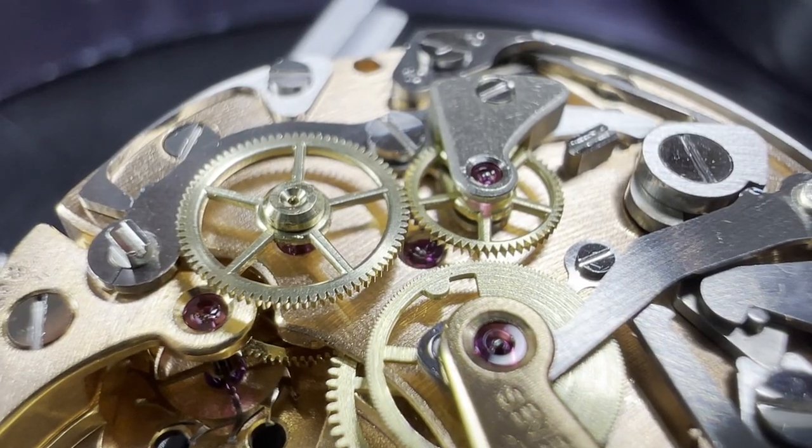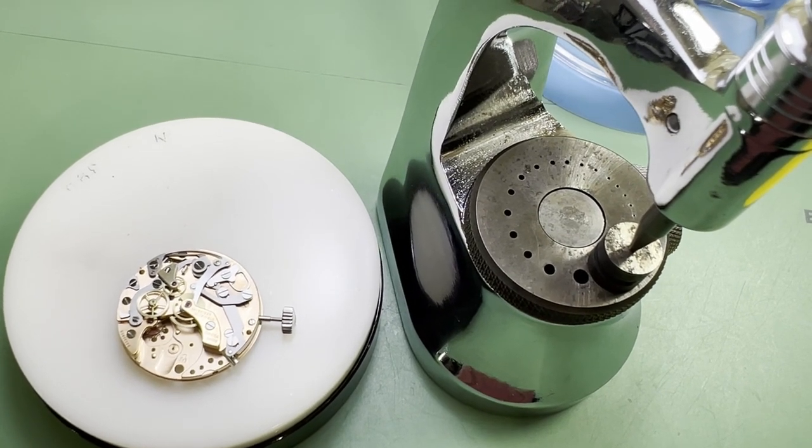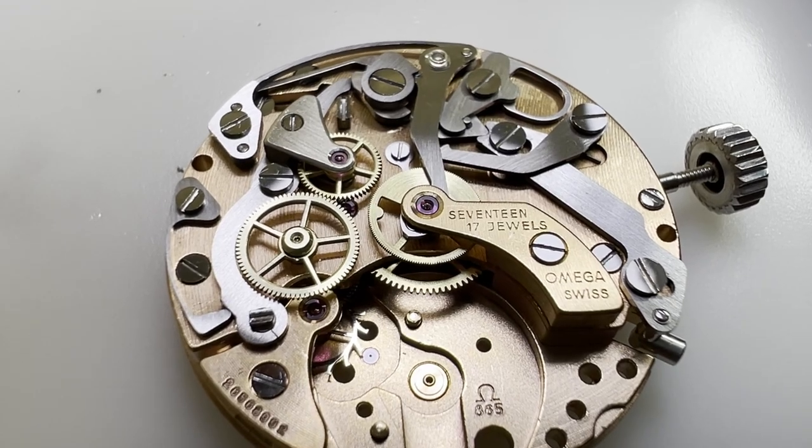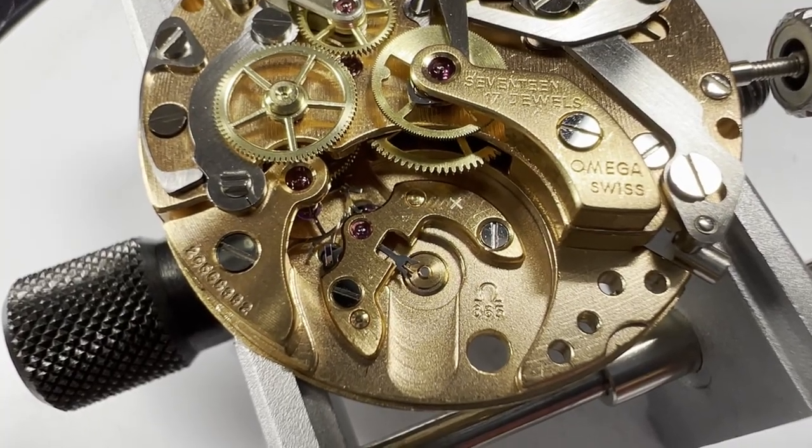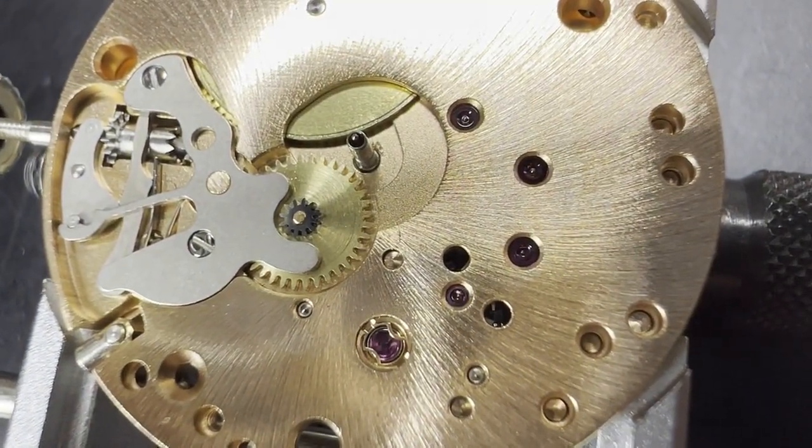The last part of the chronograph that needs to be replaced is the chronograph driving wheel, which will need to be done using a staking set to get the wheel on level. There we go, chronograph drive wheel back on. Next, the pallet forks are reinstalled. Then the watch is turned over to oil the dial side pivots and the pallet fork jewels.